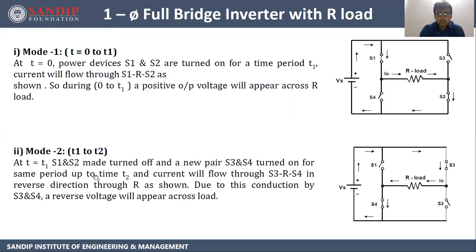In Mode 2, from T1 to T2, S3 and S4 are triggered and turned on. The current flows from Vs positive → S3 → R → S4 → Vs negative, and we get the output across the load.